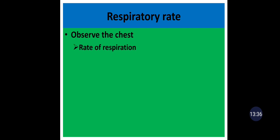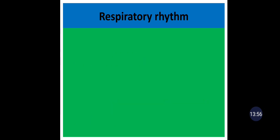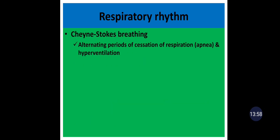The next component is respiratory rate. Observe the chest wall, rate of respiration, rhythm of respiration, and symmetric chest expansion. The normal rate of respiration in a relaxed adult is about 12 to 20 breaths per minute. If greater than 20, it is tachypnea; if less than 12, it is bradypnea. Cheyne-Stokes breathing is an alternating pattern of cessation of respiration and hyperventilation, found in patients with severe left ventricular failure.